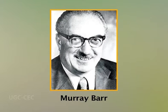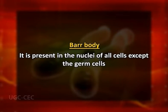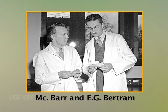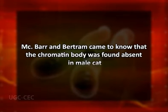Now, coming to the next part of today's lecture: Barr Bodies. A Barr body, named after the discoverer Murray Barr, is the inactive X chromosome in a female somatic cell, rendered inactive in a process called lyonization, in those species in which sex is determined by the presence of the Y or W chromosome, including humans. It is present in the nuclei of all cells except the germ cells, and is also called sex chromatin as it indicates the presence of sex chromosomes. Barr and Bertram were the two scientists to observe the deeply stained chromatin body in the nerve cell of female cat in the year 1949. Later, they came to know that the chromatin body was absent in male cats.